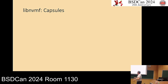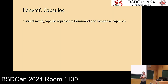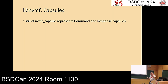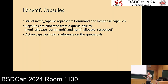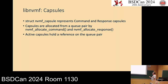Capsules are the abstraction that allows you to send commands and get responses. A struct nvmf_capsule carries either an NVMe command or completion. You allocate capsules from a queue pair — either a command or response capsule depending on your direction. Allocating a capsule binds it to that queue pair, so when you transmit it, it goes out on the queue you allocated it from. Active capsules hold a reference on the queue pair; free them with nvmf_free_capsule.